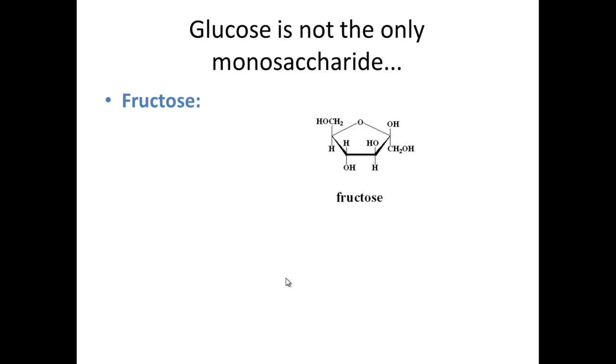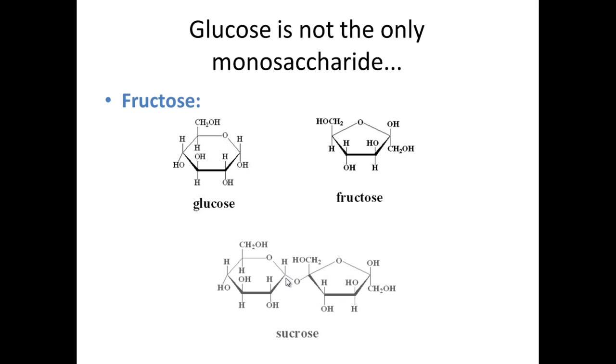Fructose can join with glucose and it forms the disaccharide sucrose. You can see again here you have the familiar bonding over the oxygen and therefore it produces a glycosidic bond.